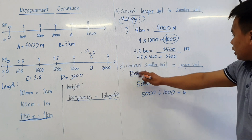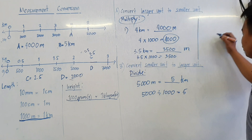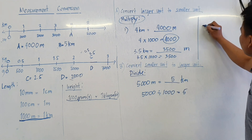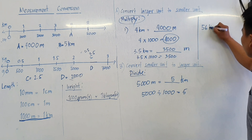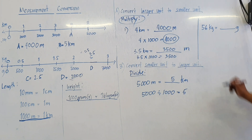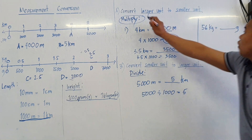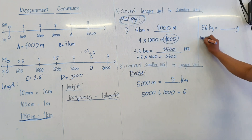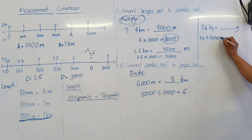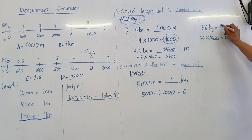How about the weight? So we have 56 kilograms to grams. Since 1,000 grams equals 1 kilogram, we're going to use multiplication. So 56 times 1,000. The answer is 56,000 grams.